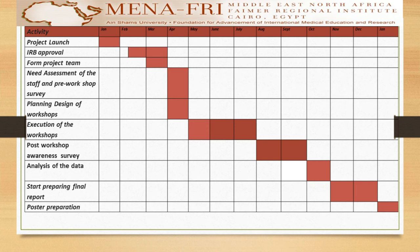The Gantt chart describes the execution of the project by time. I start by launching the project, then IRB approval, formulation of the team, need assessment of the staff, pre-workshop surveys, plan designing of the workshop, execution of the workshops, and post-workshop survey.